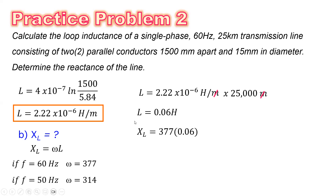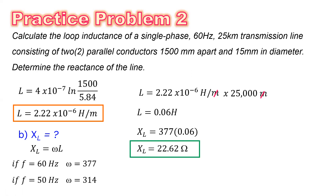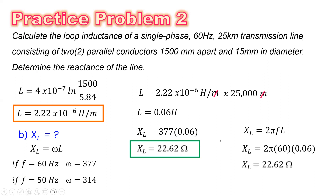Now, since we have the value of L, we can substitute it into the inductive reactance formula. X sub L, or the inductive reactance, equals omega multiplied by L. If the frequency is 60 Hz, omega equals 377 radians per second. If the frequency is 50 Hz, omega equals 314 radians per second. So X sub L equals 377 multiplied by the inductance of 0.06, giving an inductive reactance of 22.62 ohms. Alternatively, the inductive reactance equals 2 pi times 60 times the value of the inductance.